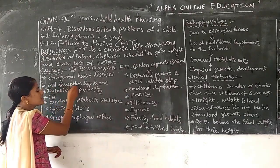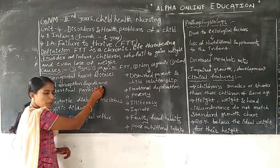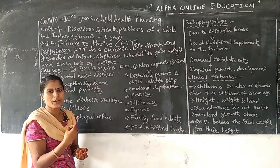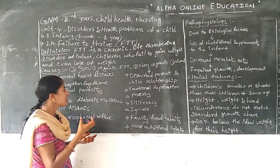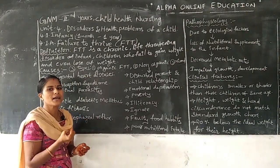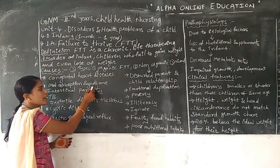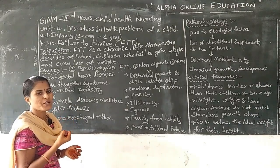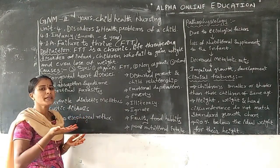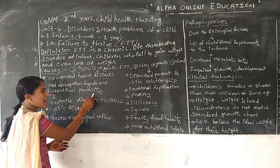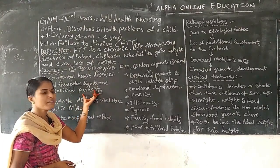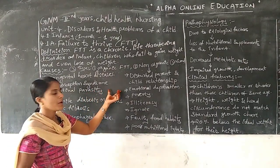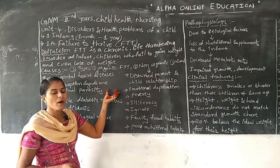Next one is the malabsorption syndrome. Malabsorption means when the infant is eating food, the food should be digested, and after digestion, some amount should be absorbed by the intestines. Due to malabsorption — caused by intestinal parasites such as worm infestations or hookworm, pinworm — the infant should have failure in their growth.